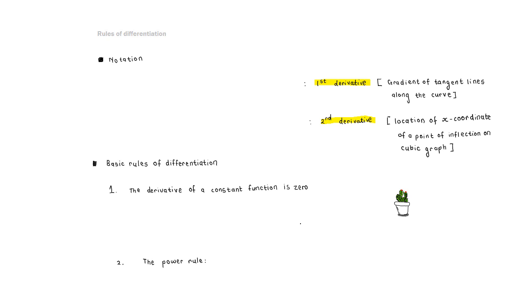Before we look at the rules of differentiation, let's first look at how we represent the derivative function — in other words, the different notations that mean something is a derivative. At Grade 12 level we are only going to be working with the first and the second derivative, and these are the different notations we're going to use to represent them.